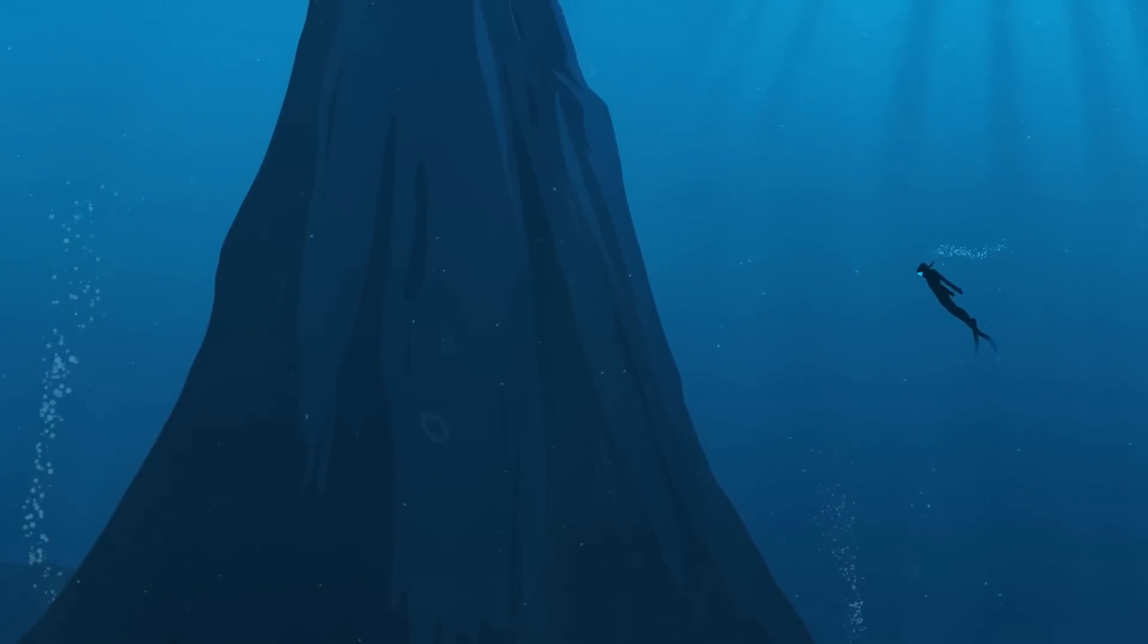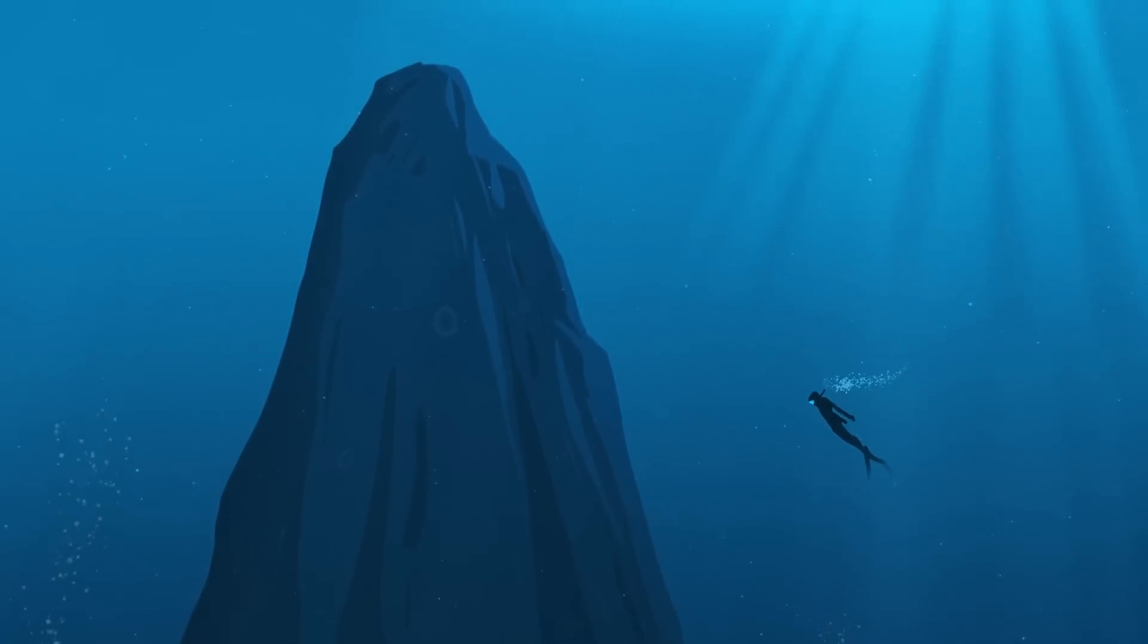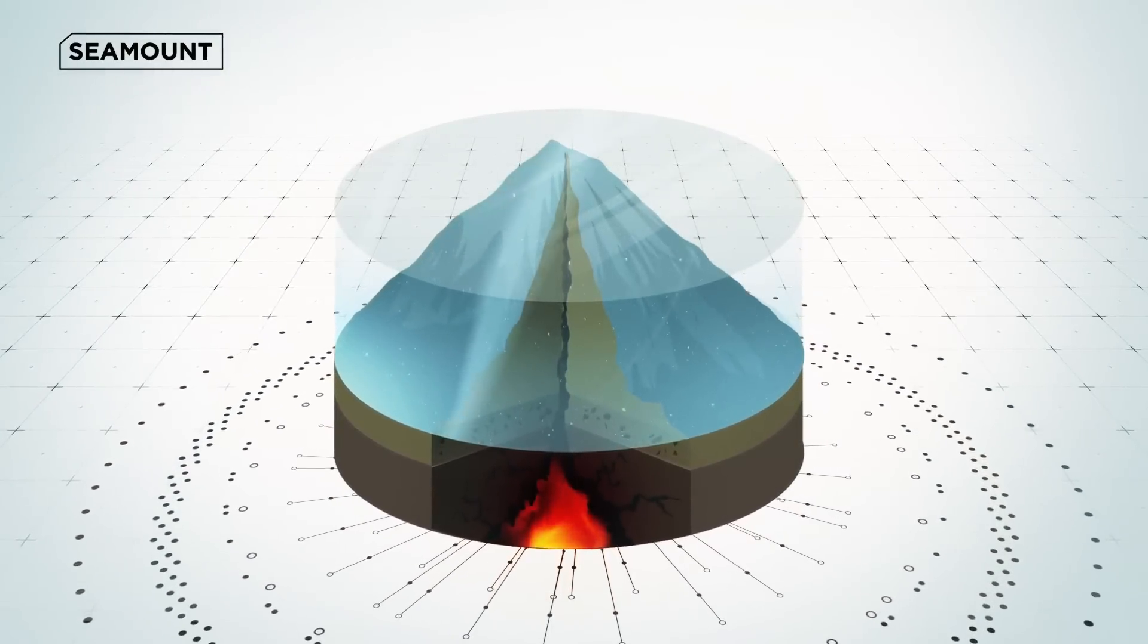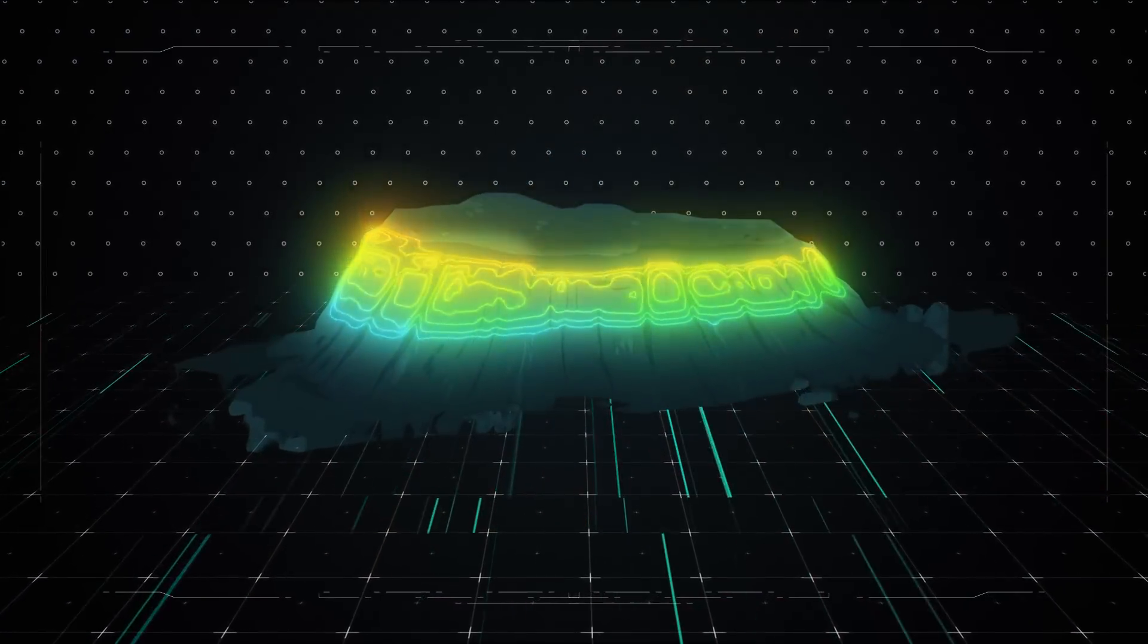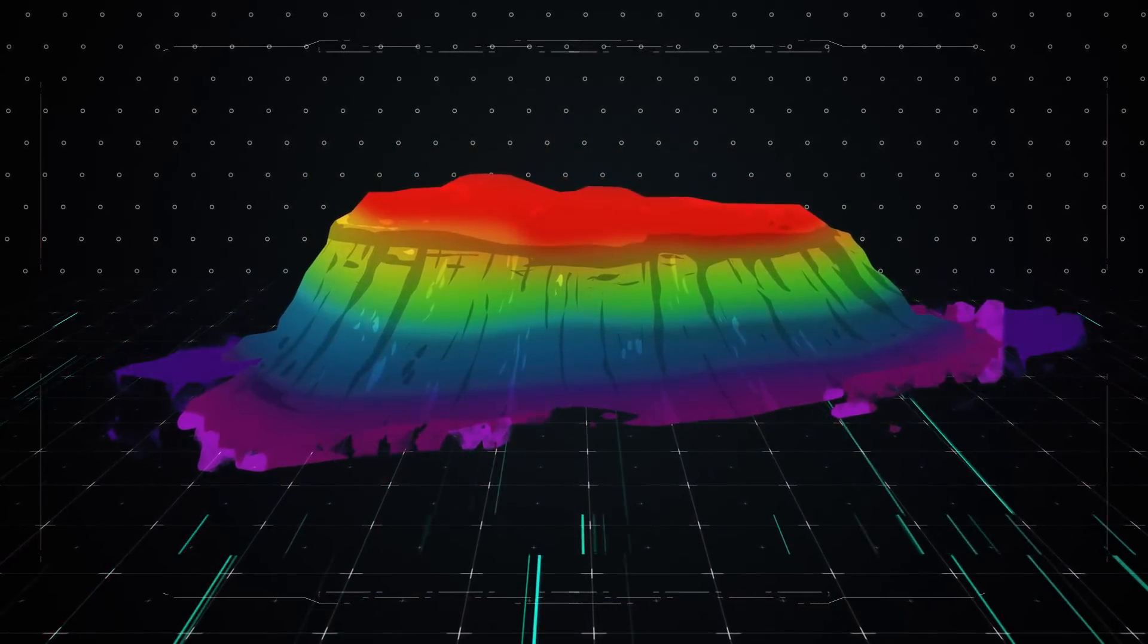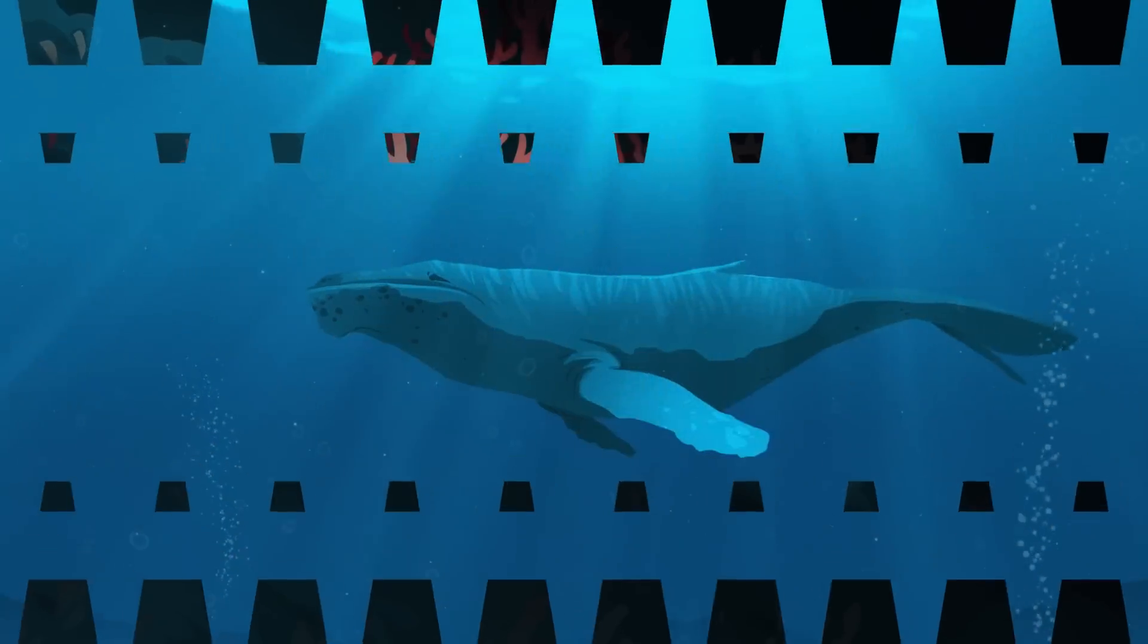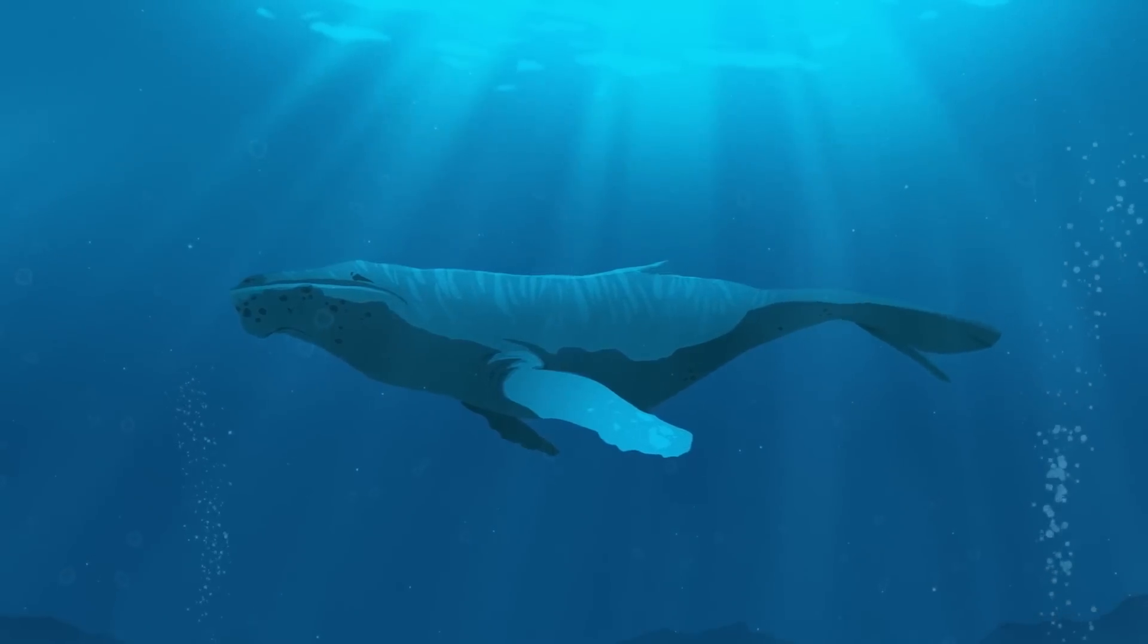While submarine canyons plummet into the deep sea, rocky formations called seamounts rise from the darkness. Seamounts are the remnants of dormant volcanoes, some of which climb from the deep sea all the way to the ocean's surface. Seamounts create huge three-dimensional ecosystems, providing habitats for a variety of marine organisms. Species like sea stars and deep sea corals latch on its rocky cliffs, while fish and migratory animals like whales feed on numerous species of shellfish and plankton.